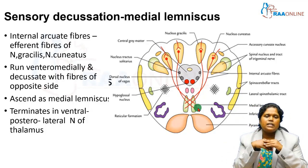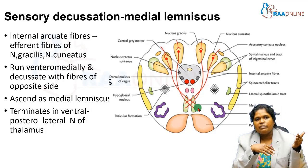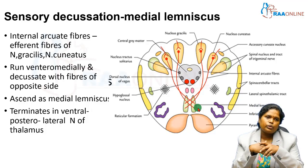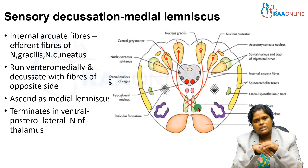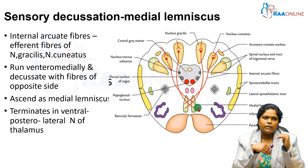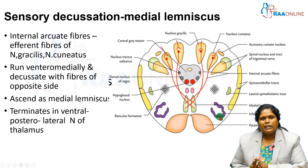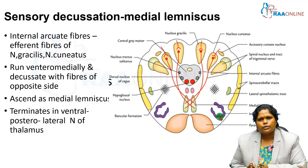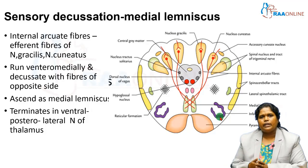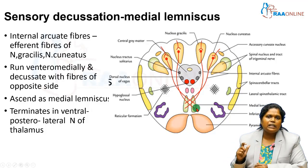The medial lemniscus relays in the VPL nucleus of the thalamus — different from the VPM nucleus where the spinal trigeminal tract relays. The third-order neuron then starts from the thalamus and ends in the primary sensory area, area number 3,1,2. In sensory decussation, what decussates are the second-order neurons arising from the nucleus gracilis and cuneatus, which then form the medial lemniscus.